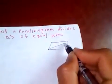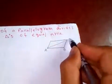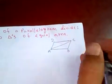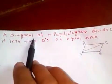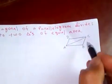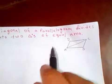Let's name it ABCD. This is a parallelogram ABCD and AC is a diagonal which divides this parallelogram into two triangles.